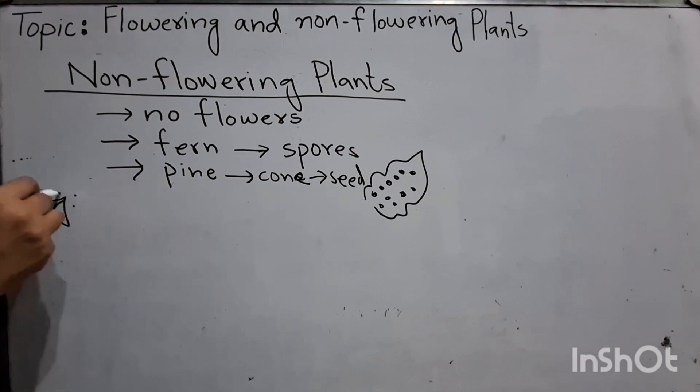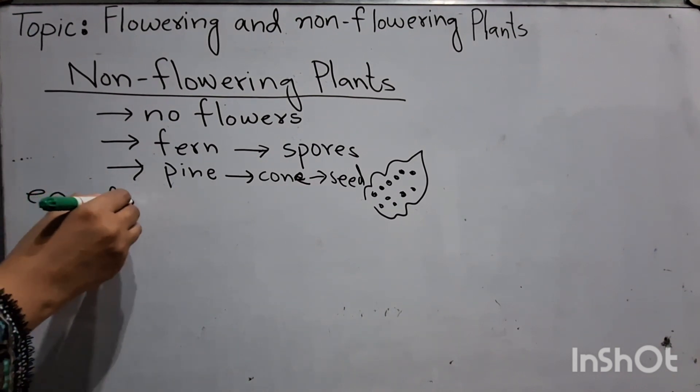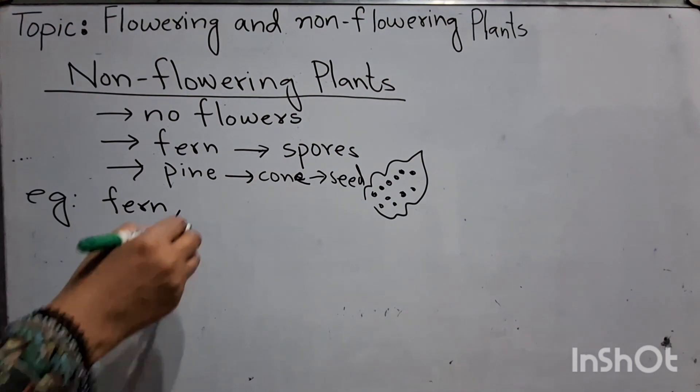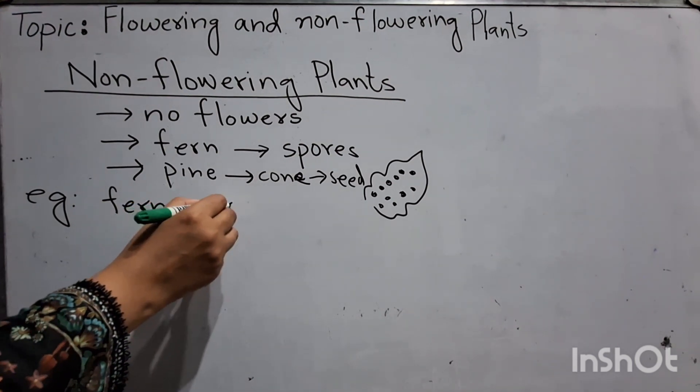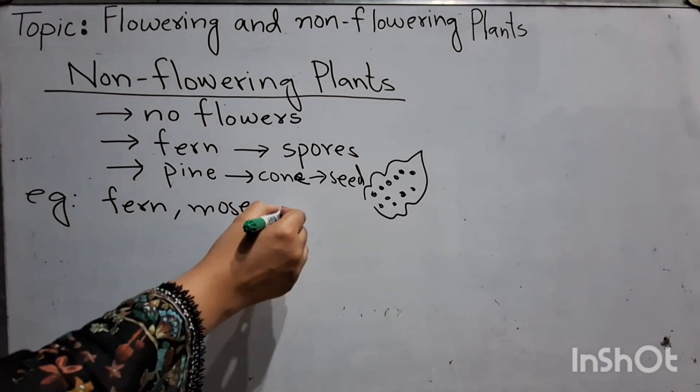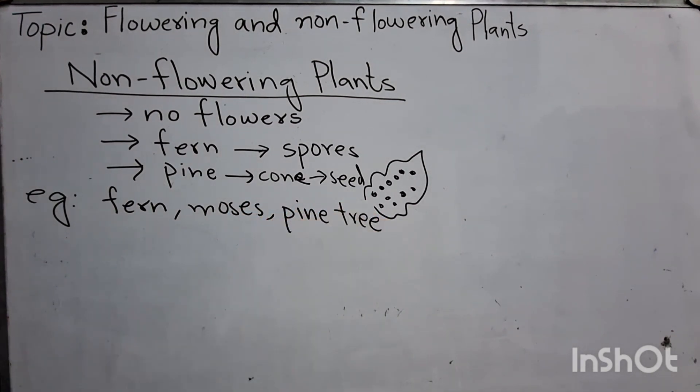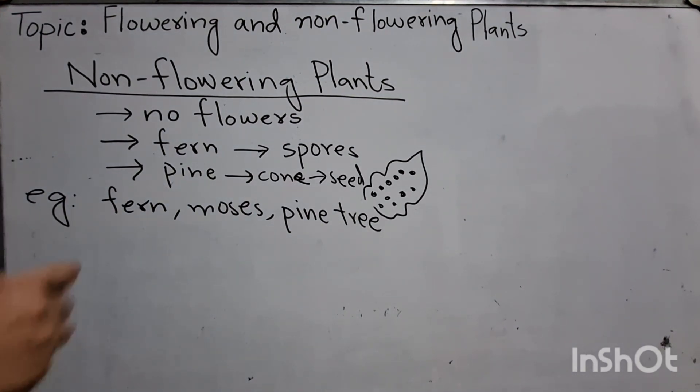What are the examples of non-flowering plants? Fern, moses, and pine tree. These are non-flowering plants.